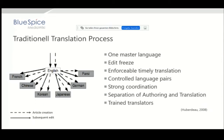Authoring and translation are clearly separate, and in most cases at bigger companies you have trained professional translators. If you combine this with the wiki way, it collides — it's not the wiki philosophy to have strong coordination, an edit freeze, or one master language. So there you have the squaring of the circle when customers want to combine the wiki philosophy with the translation process.